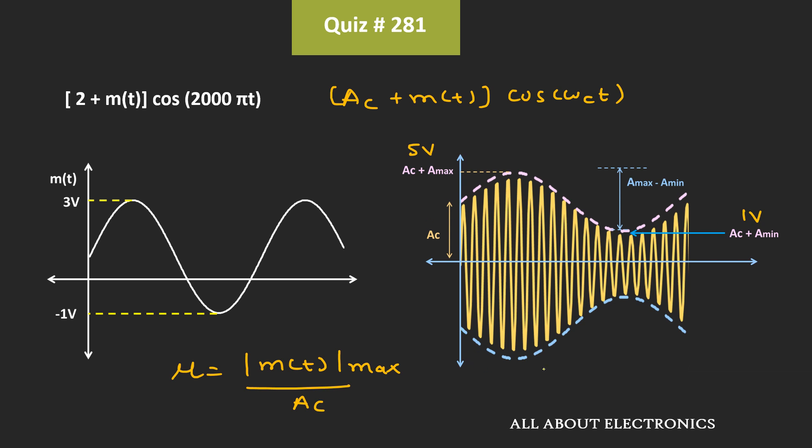And similarly, on the negative side also, we will get the same envelope. That means this maximum point will be equal to -5V, while this minimum point will be equal to -1V.